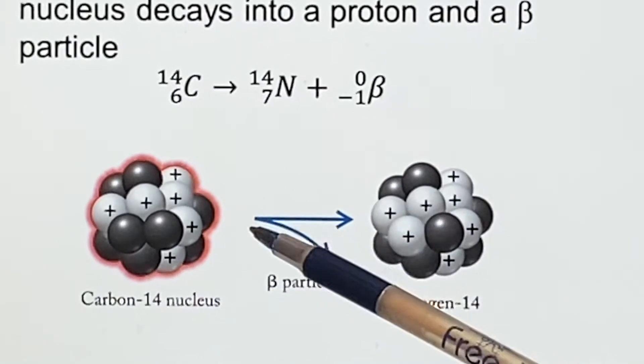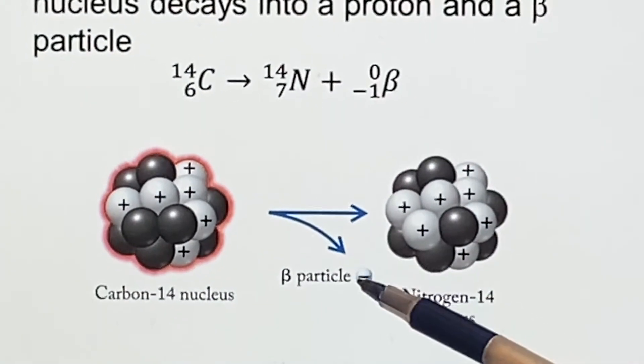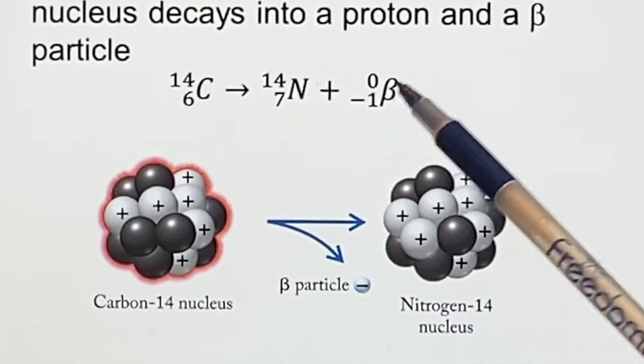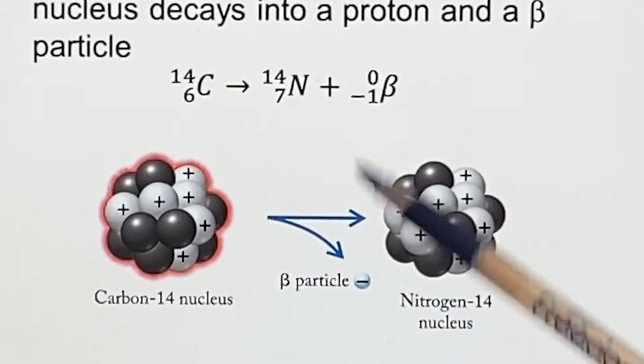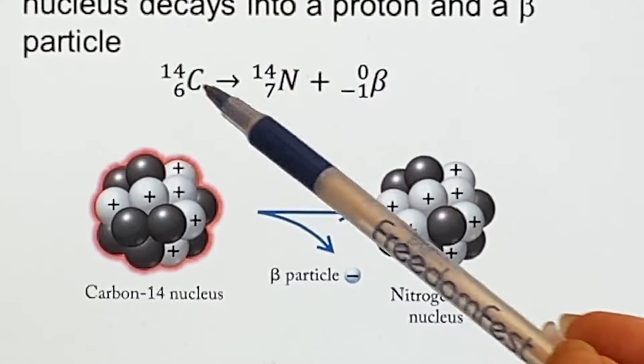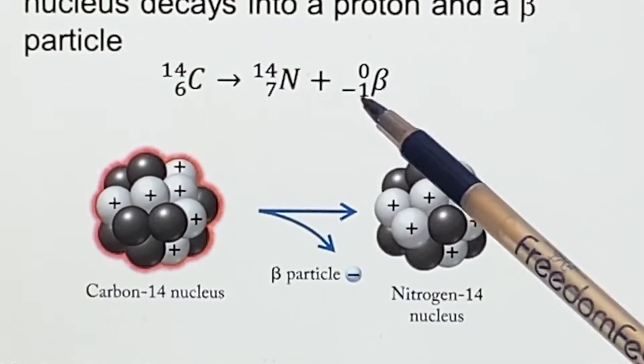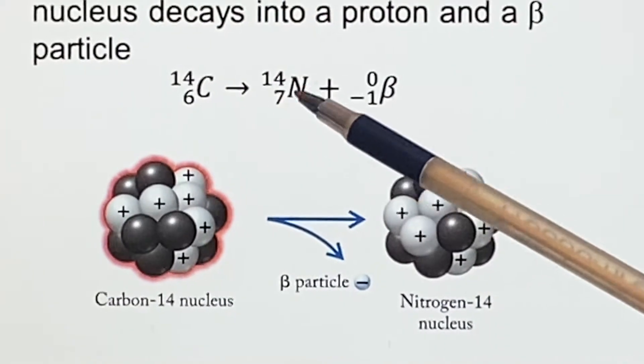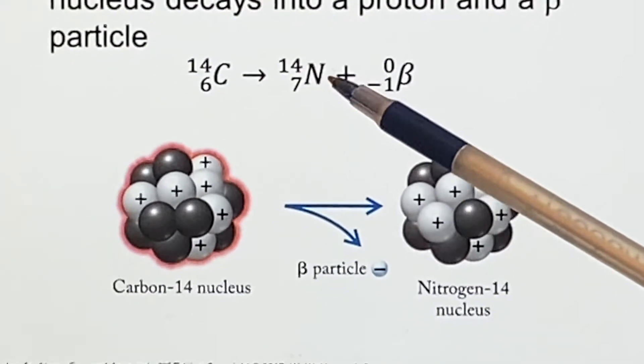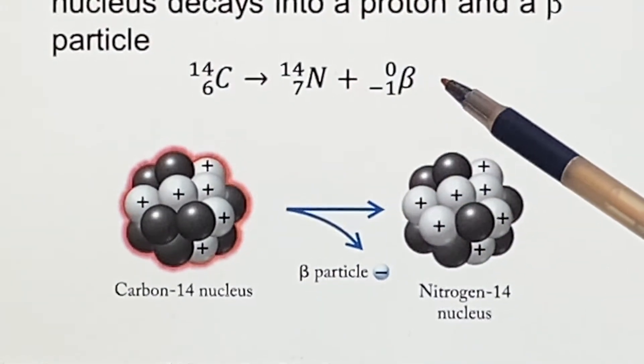It will decay into a beta particle. There's the beta particle—negative charge because it's actually an electron, but it's very light so no mass. When you do this: 6 equals 7 minus 1, 14 equals 14 plus 0. So you're looking up number seven, you say oh that's nitrogen, and then you write this out.